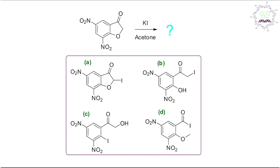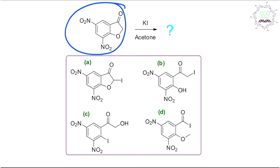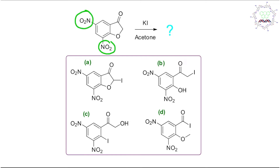Let us read the problem a little carefully. The reaction condition is pretty easy, so if we focus on the starting material our life will be simpler. This molecule has two nitro groups in the meta position, this carbonyl group is also meta with respect to them and is in conjugation, and this oxygen is in the para and ortho position with respect to these two nitro groups.